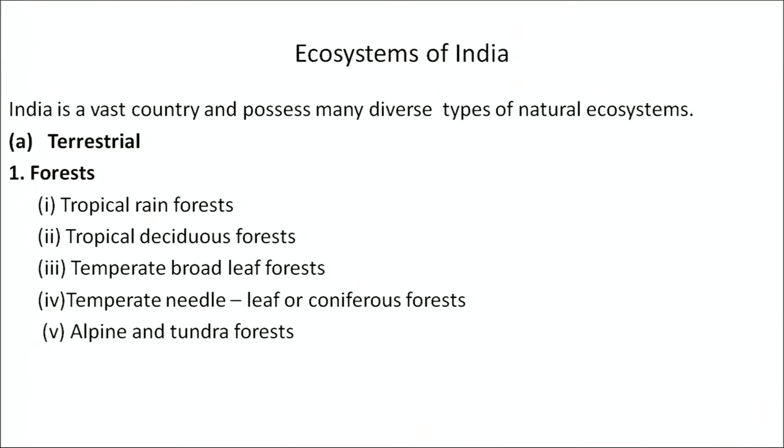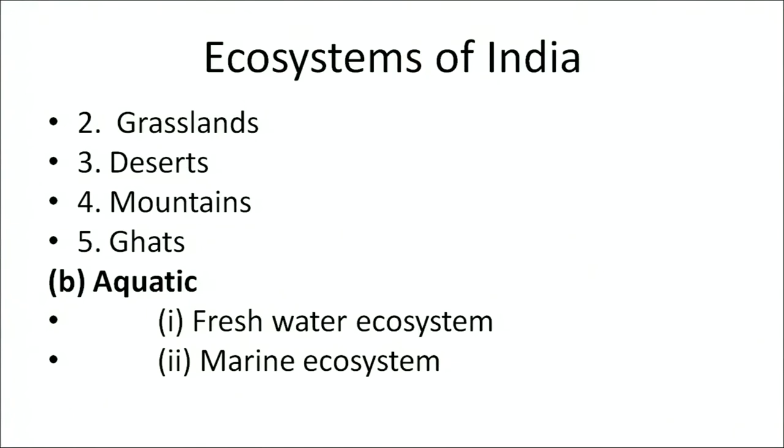Now let us learn about the biomes of India. The first important type of biome is forests, which are widely spread all over the country. They can be classified as tropical rainforest, tropical deciduous forest, temperate broadleaf forest, temperate needle-leaf or coniferous forest, and alpine and tundra forest. Other types of terrestrial biomes are grassland, deserts, mountains, ghats and of course aquatic ecosystems such as the freshwater and marine biomes.